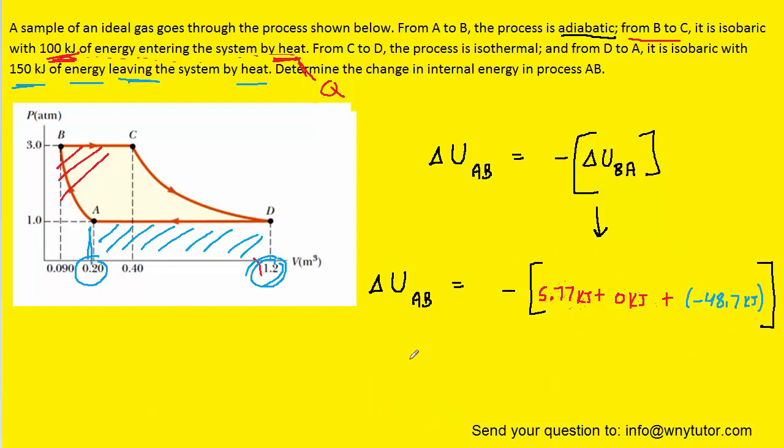And so now we're ready to compute the right-hand side of the equation, which again gives us the change in internal energy of the process from A to B. And when we do so, we get approximately 42.9 kilojoules. And this is indeed the correct answer.